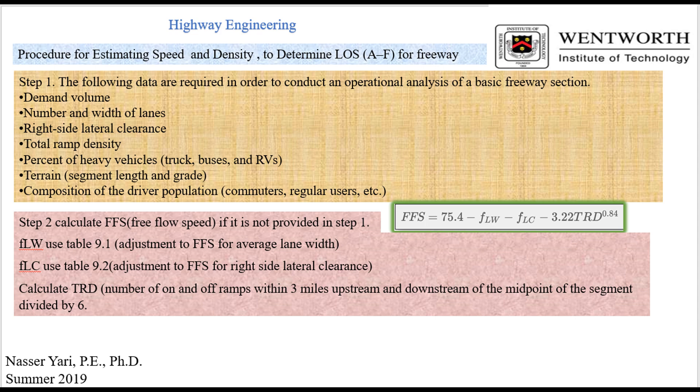And as you can see, step one is the data that are required to continue is the input data. And we like to have in those input data the demand volume, number and width of the lanes, right side shoulder, what's the clearance on right side shoulder, the total ramp density, and also what type of the profile, the terrain, is it rolling or is it level or mountainous. And then finally the composition of the driver population, whether are they a commuter or they're lost, they don't know where they're going.